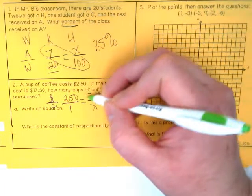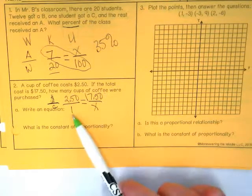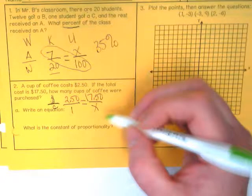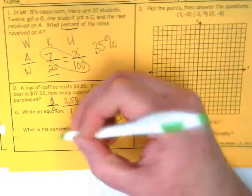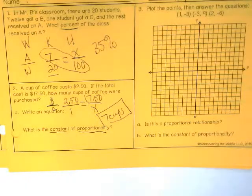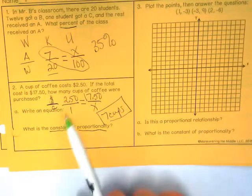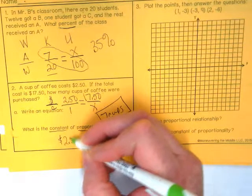Seventeen fifty times one would be seventeen fifty still. Divide it by the two fifty and you get seven cups. And then this is asking: what is the constant of proportionality? Remember, constant of proportionality is the same thing as our unit rate. What is our unit rate on this one? It's two dollars and fifty cents.